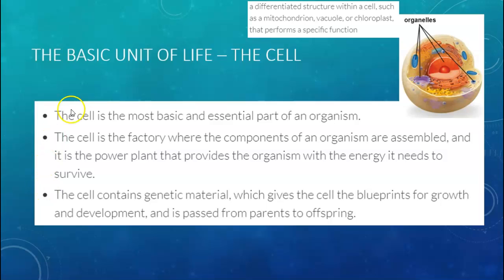Within the cell, there are also smaller structures called organelles. Organelles are differentiated structures within a cell. Examples of organelles include the mitochondrion, vacuole, and chloroplast in a plant cell, and each of them performs a specific function.